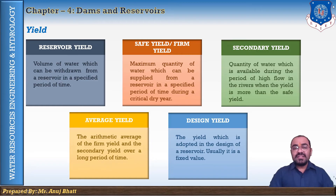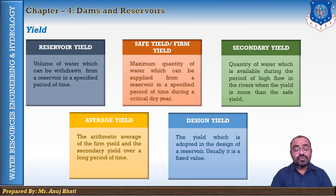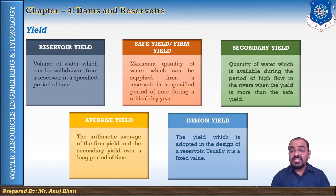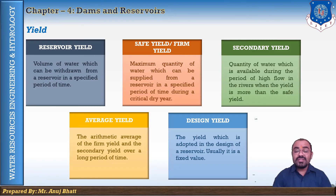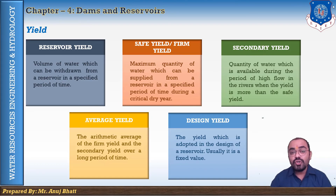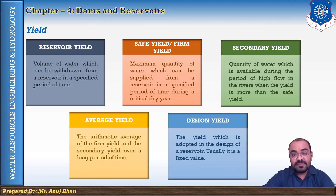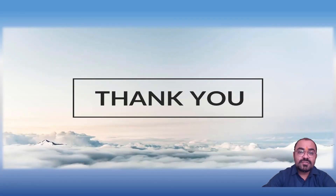So these are the yields that are very important whenever you are designing or planning a reservoir. We have discussed about the different storage levels: minimum pool level, maximum pool level, and normal pool level. For zones of storage, we discussed useful storage, dead storage, surcharge storage, bank storage, and valley storage. These are important topics that can be asked in exams. I hope students you understood both topics thoroughly. Thank you so much for your kind attention, we'll see you in the next lecture.